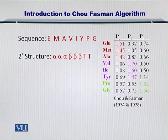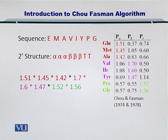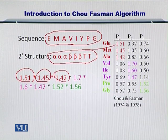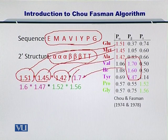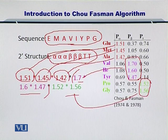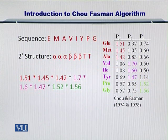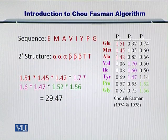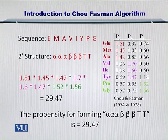Now, we want to evaluate if such a case will happen. Therefore, you can compute the propensity of the formation of this secondary structure. For each one of these secondary structural elements and each one of these amino acids, you can just look up the propensity table and obtain the propensity values as shown here. For the beta sheets, these values are put here; for the turns, these values are put here. By simply taking a product of the propensity of each one of these amino acids, you can arrive at the overall propensity for the secondary structure. The propensity for formation of a secondary structure containing an alpha helix, beta sheet, and a turn in this configuration is 29.47.